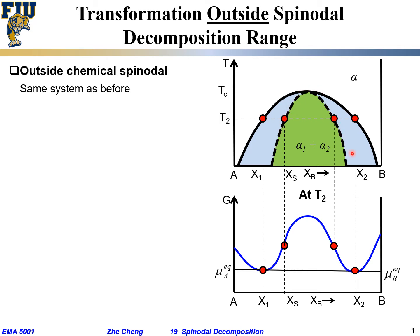This dashed curve is the chemical spinodal. Within the chemical spinodal, you are assured that the second derivative of the Gibbs free energy versus composition curve is always negative — the curvature is always negative.